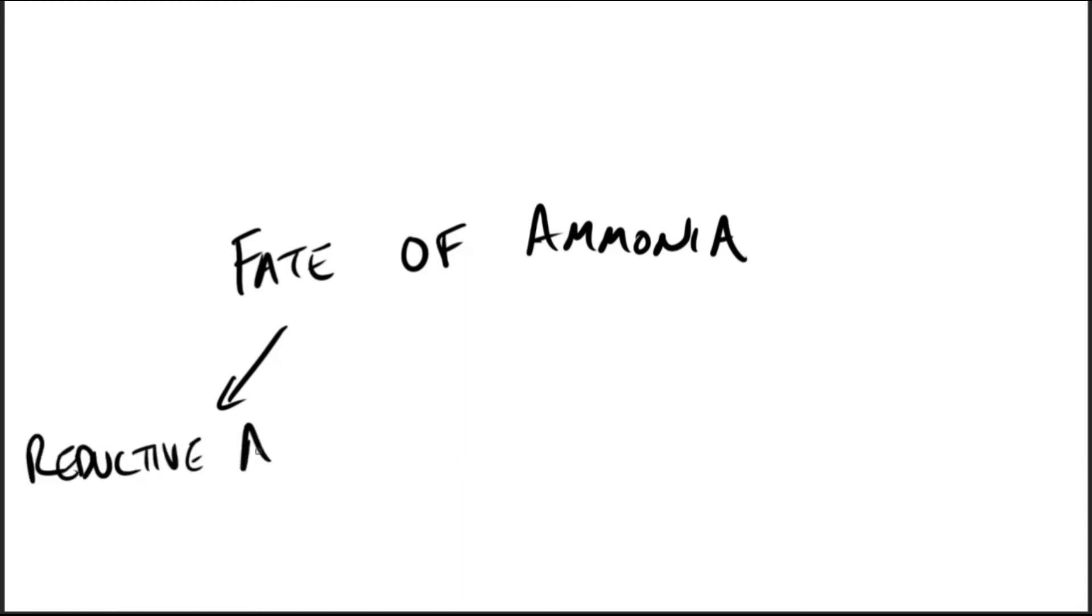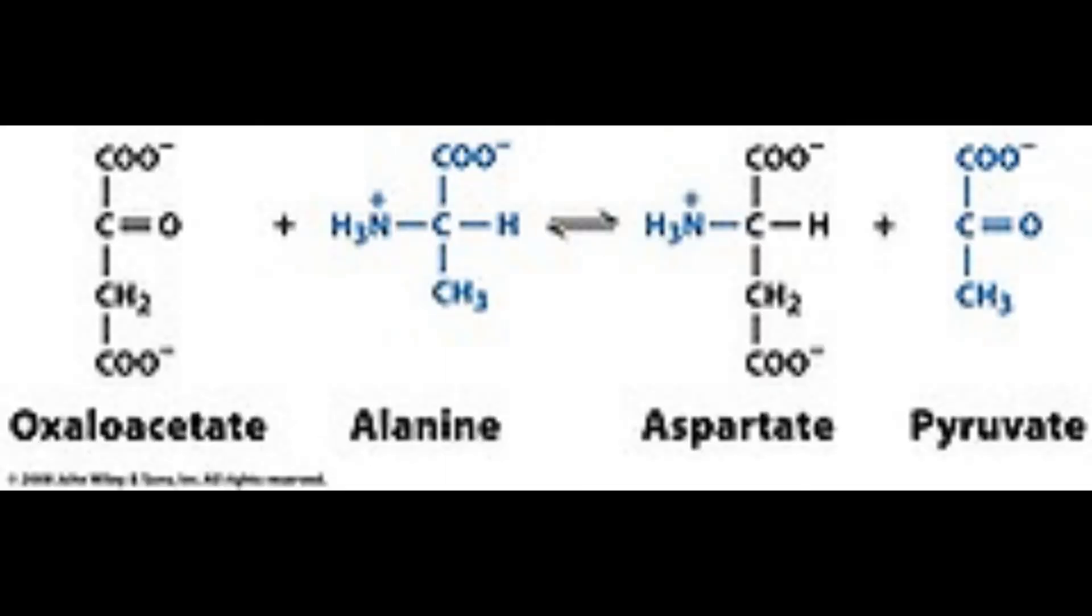For example, oxaloacetate with alanine will give you aspartate and pyruvate. You can see the addition of the amine group to the oxaloacetate producing aspartate.